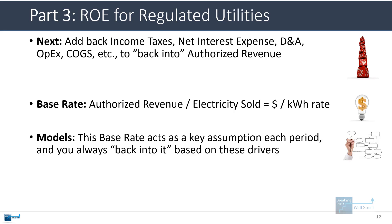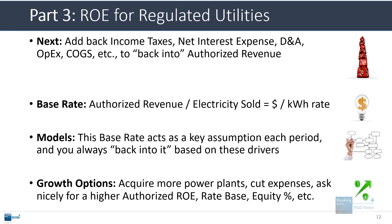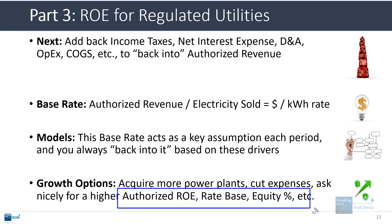Since regulators heavily restrict the return on equity that utility companies can earn, to grow they need to either acquire more power plants or find a way to sell more power, cut expenses, or ask the government for a higher authorized return on equity, a higher equity percentage, or something else along those lines.